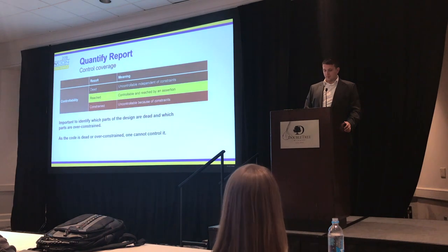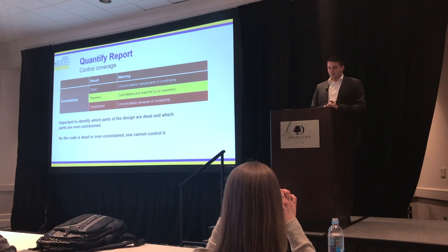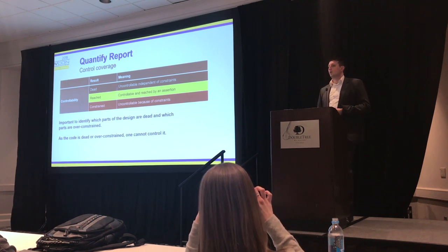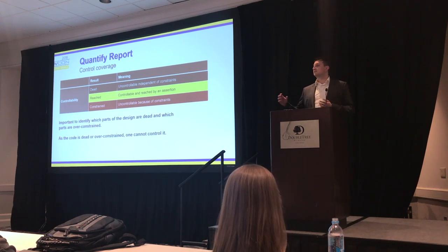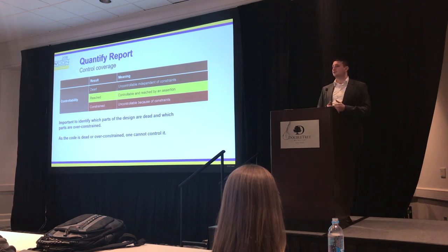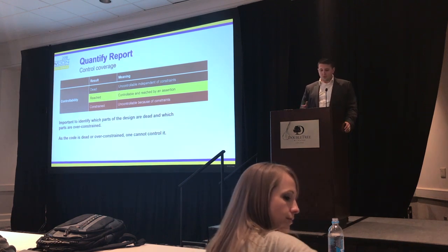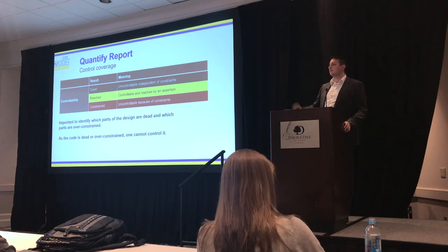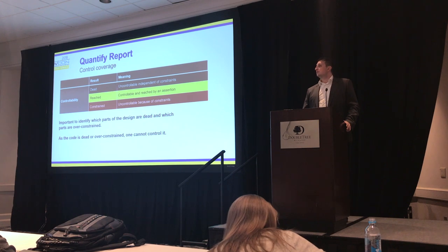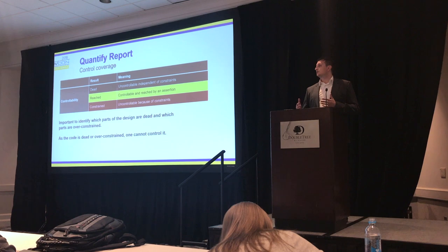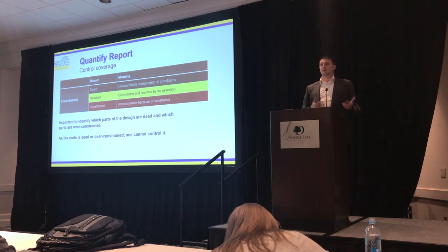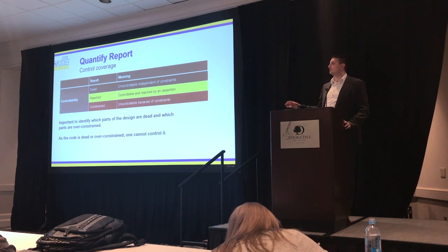From the controllability side, we can have different results. We can identify dead code — and in formal verification, when code is reported as dead, it means there is absolutely no input trace that can activate that line of code. Unlike simulation, this is real dead code. We also identify code which is reached — actually reached by an assertion you wrote. And we can identify code which is constrained, which is basically the same as dead code, but it's not dead by design — it's dead due to a constraint you introduced. If something is unreachable, you cannot control it, and if you cannot control it, you cannot observe it.